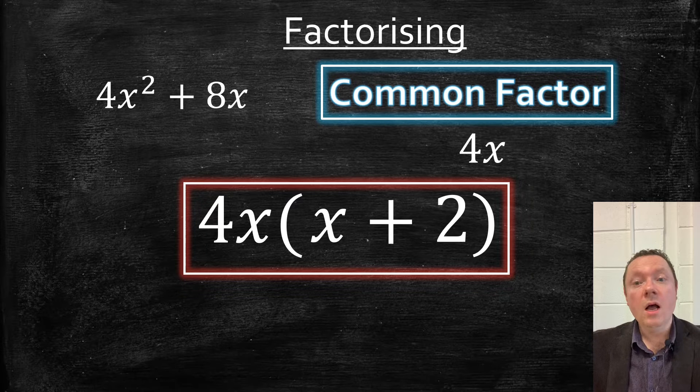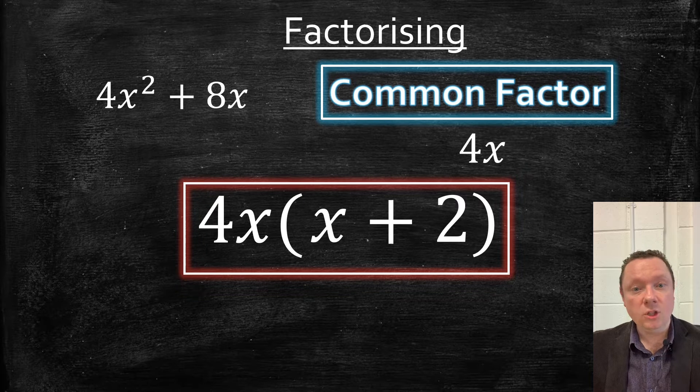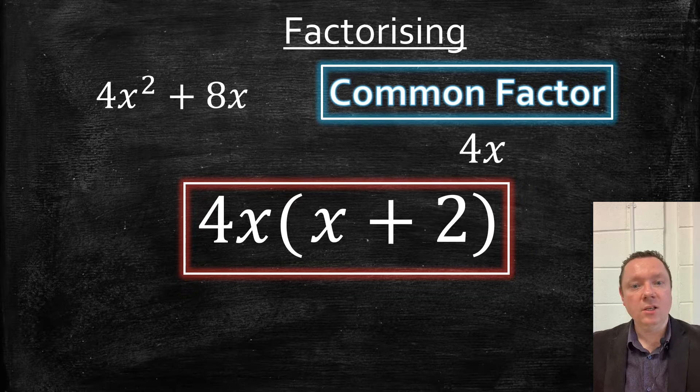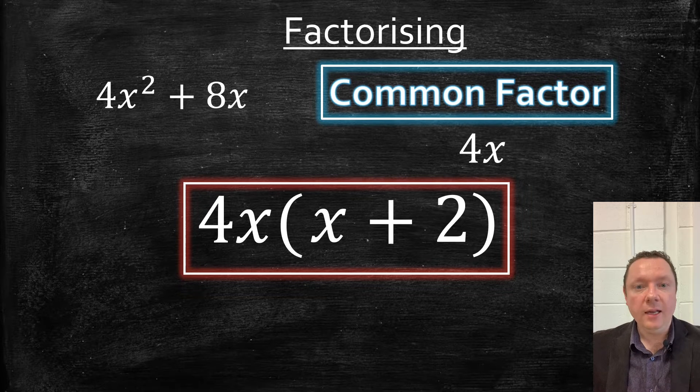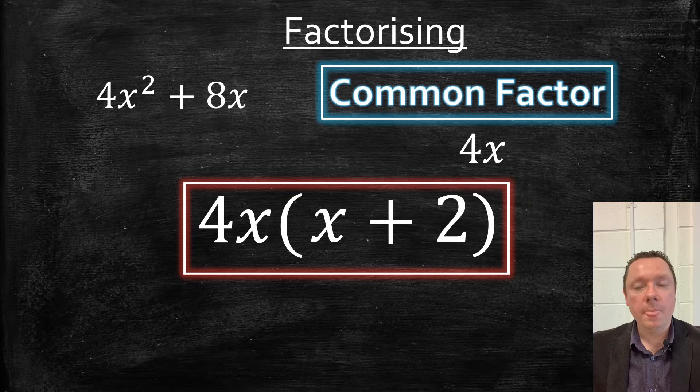Just a quick one with this. So if there's an x squared, don't assume it's double brackets. Always check first, is there a common factor? If there is, it's single bracket. If not, it will be a double bracket one. OK, moving on.